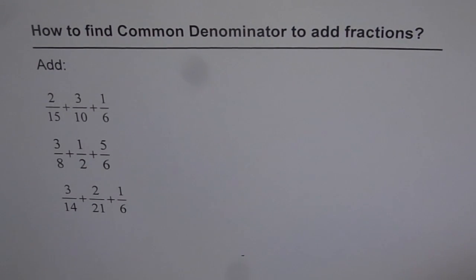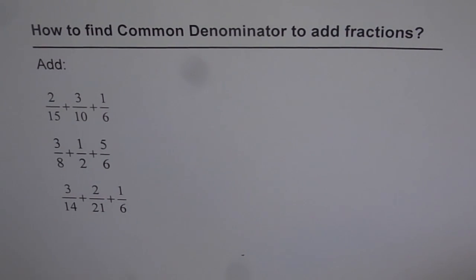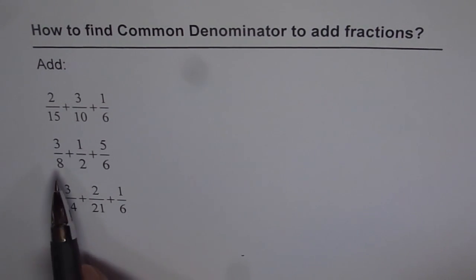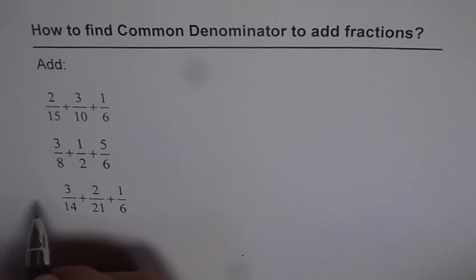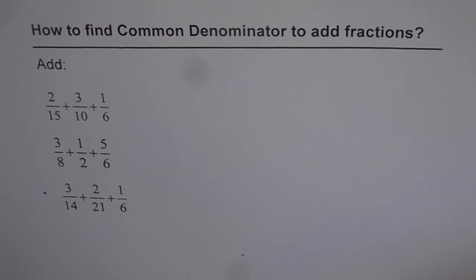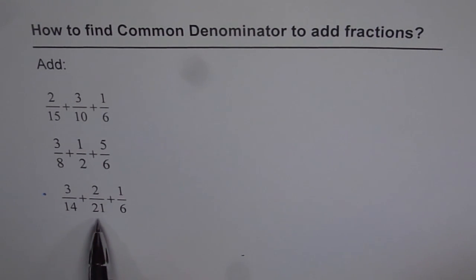How to find a common denominator to add fractions. This time we have three fractions to add. Here are three different examples — I will do one of them for you and leave the other two for practice. Let me do the last one, which is 3 over 14 plus 2 over 21 plus 1 over 6.